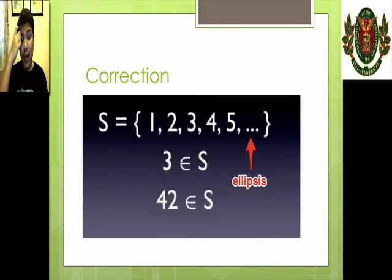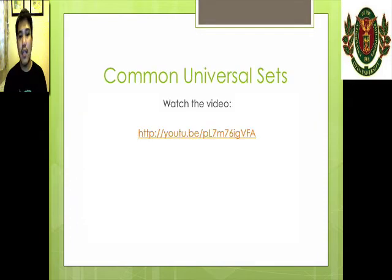Okay, and we found a correction, just a tiny one. He mentioned the term ellipse, but this is not an ellipse, this is an ellipsis. Okay, this is an ellipse. Three dots is called an ellipsis. Okay, the next video is about common universal sets, so please pause now.